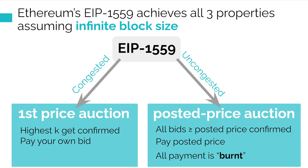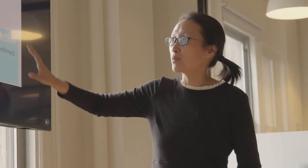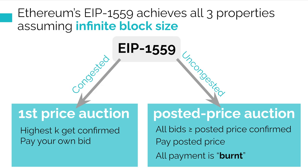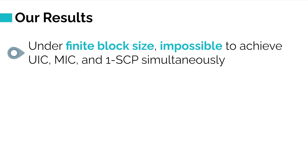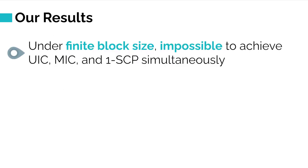An interesting question is: does the burn rule introduce more expressive power in decentralized mechanism design? Tim proved that EIP-1559 satisfies all three properties in the uncongested regime, but in the congested regime things fall apart. This leaves an open question: if we have finite block size, can we have a dream mechanism? Uncongested is kind of like infinite block size, and congested corresponds to finite block size.